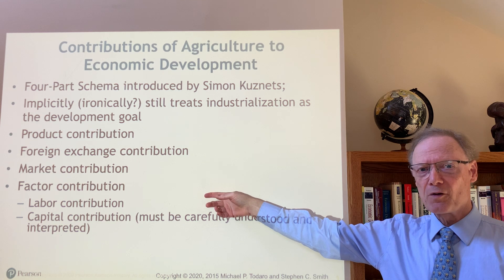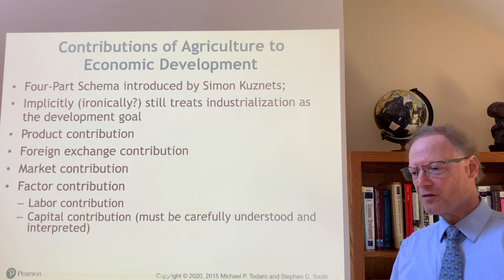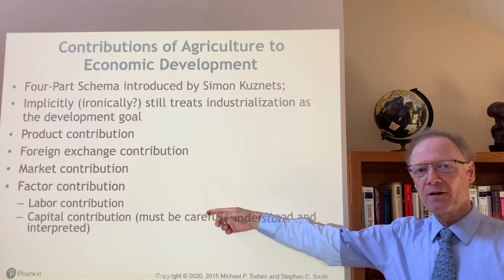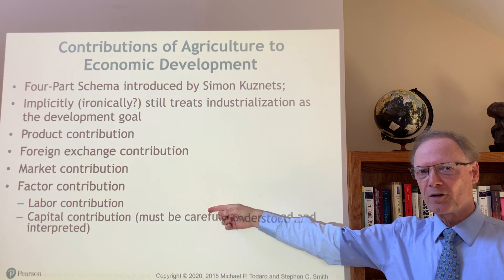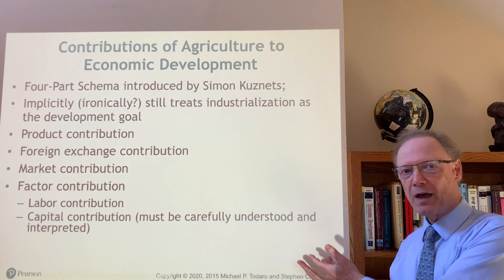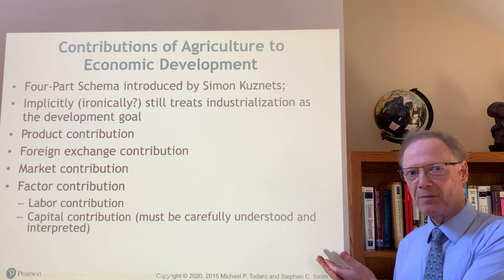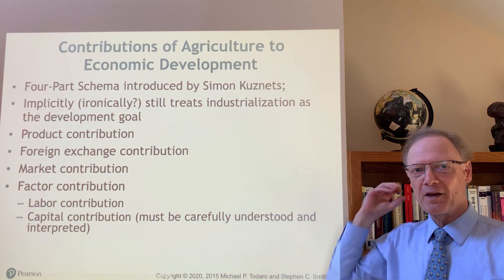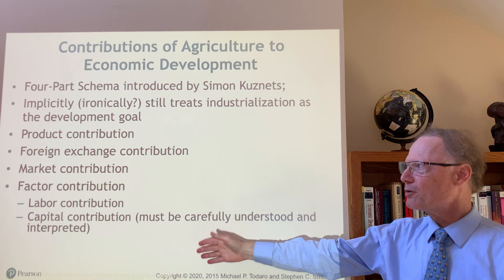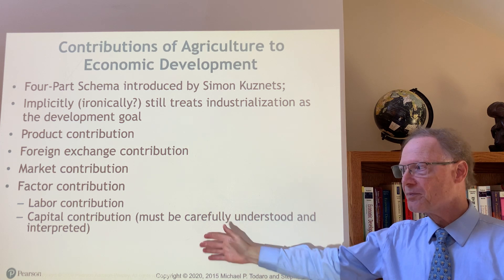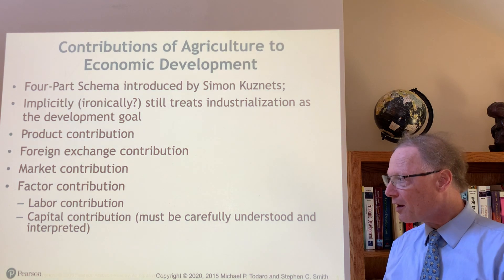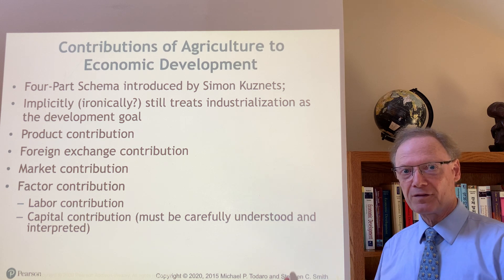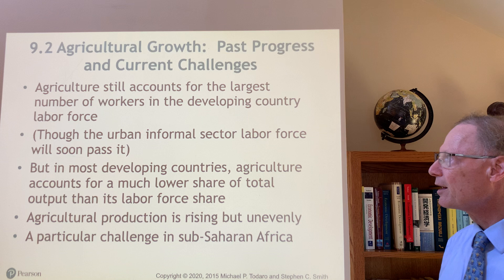Finally, we have the factor contribution, the most complex of the four. The labor contribution doesn't just mean by fiat saying workers will move out of agriculture into manufacturing. Rather, by investing in agriculture, labor productivity goes up sufficiently so that it makes economic sense for some labor to be reallocated as earnings opportunities arise in manufacturing. The capital contribution is the most subtle: first there must be investment in agriculture to increase productivity, and once development proceeds, some profits from the now more productive agriculture can be reinvested in other activities, even as some is reinvested in agriculture.